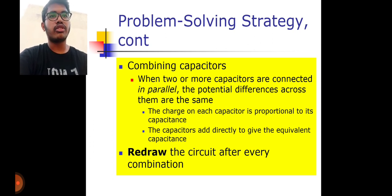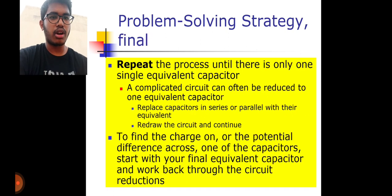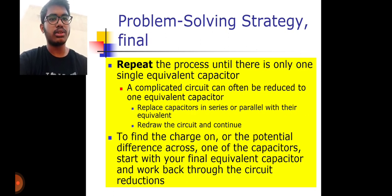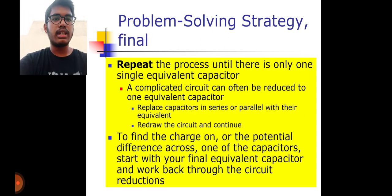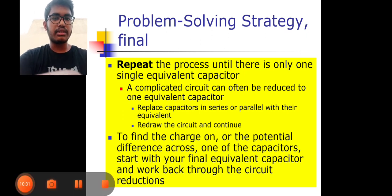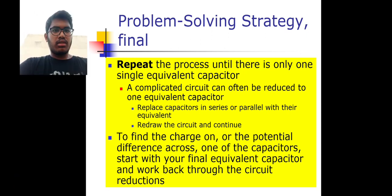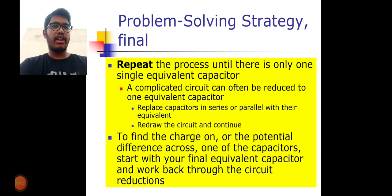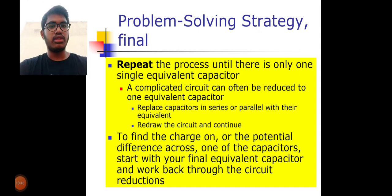Every time you solve a problem, redraw the circuit for each combination and repeat the process until there is only one single equivalent capacitor. A complicated circuit can always be reduced to one equivalent capacitor by replacing capacitors in series or parallel with their equivalent and redrawing the circuit.